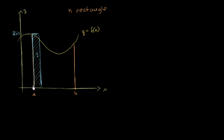And just to have a convention here, because I'm going to want to label each of the x values — the left boundaries — we'll say a is equal to x sub 0. So we could also call this point right over here x sub 0. And then we go to the next rectangle, and we could call this x value x sub 1. It's the left boundary of the next rectangle. If we evaluate f of x sub 1, we get this value right over here — this right over here is f of x sub 1.